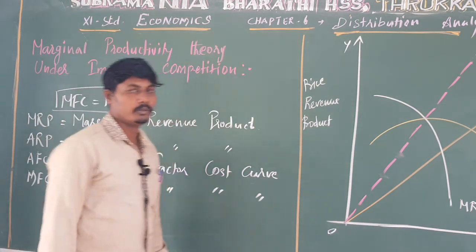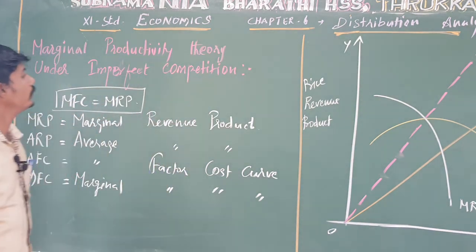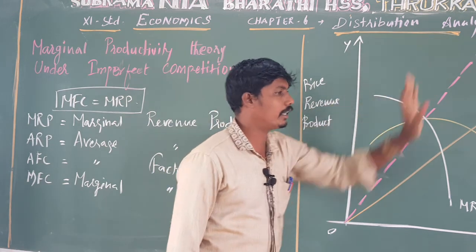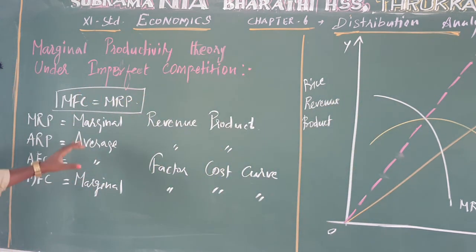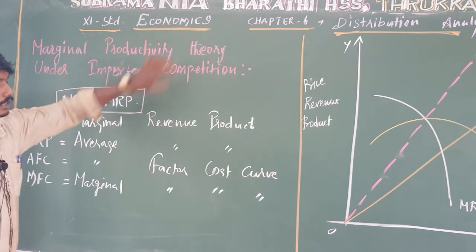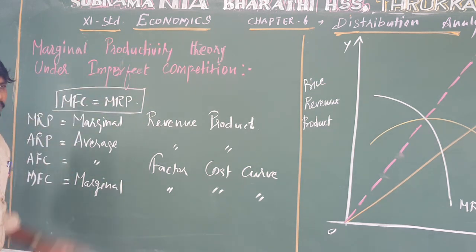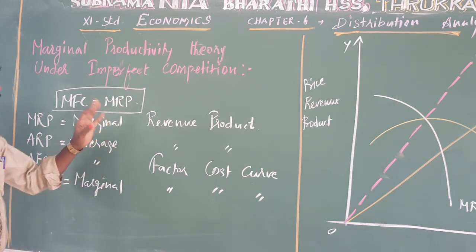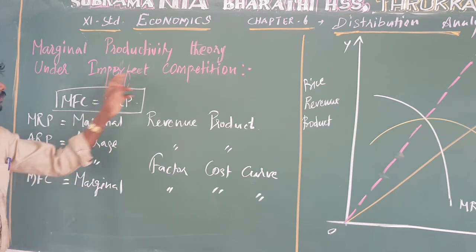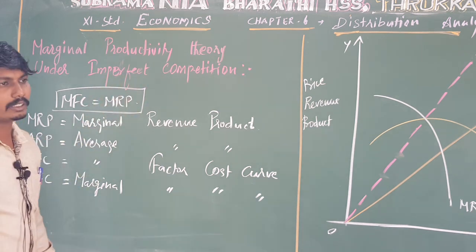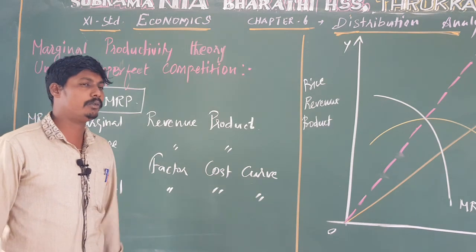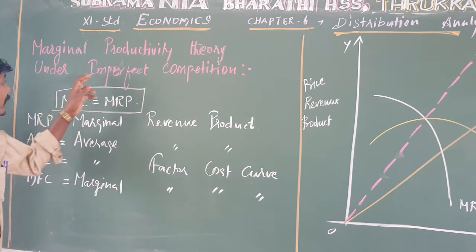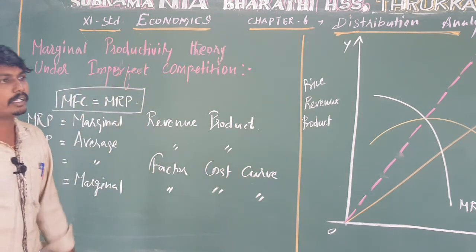Dear students, now we are going to look at the topic for 11th grade economics, Chapter 6, Distribution Analysis. We are going to cover the topic of marginal productivity theory. The marginal productivity theory is classified into two categories: the first one is perfect competition, and the second one is imperfect competition. The last video discussed perfect competition. Today we are going to look at the topic of imperfect competition in the marginal productivity theory.